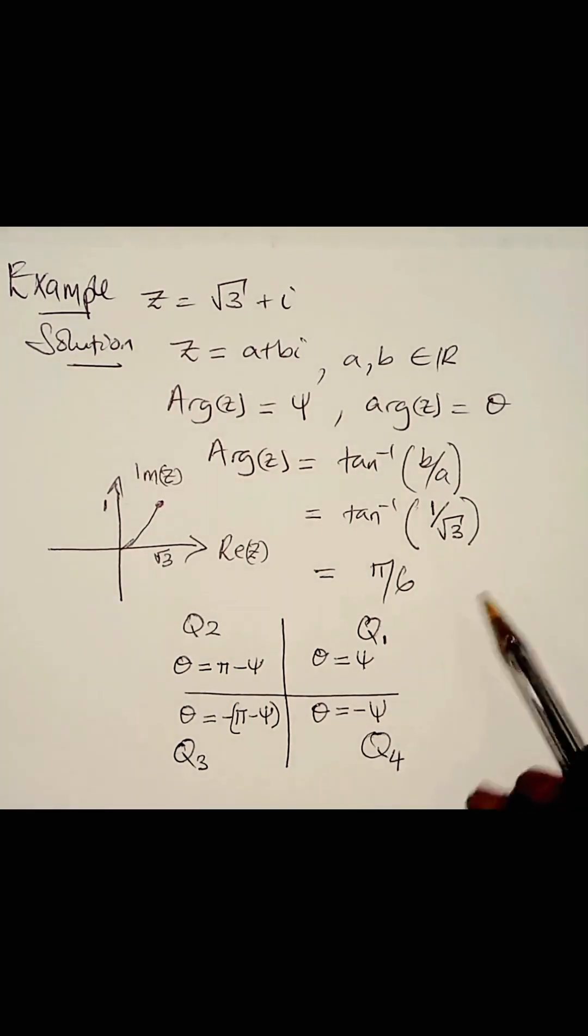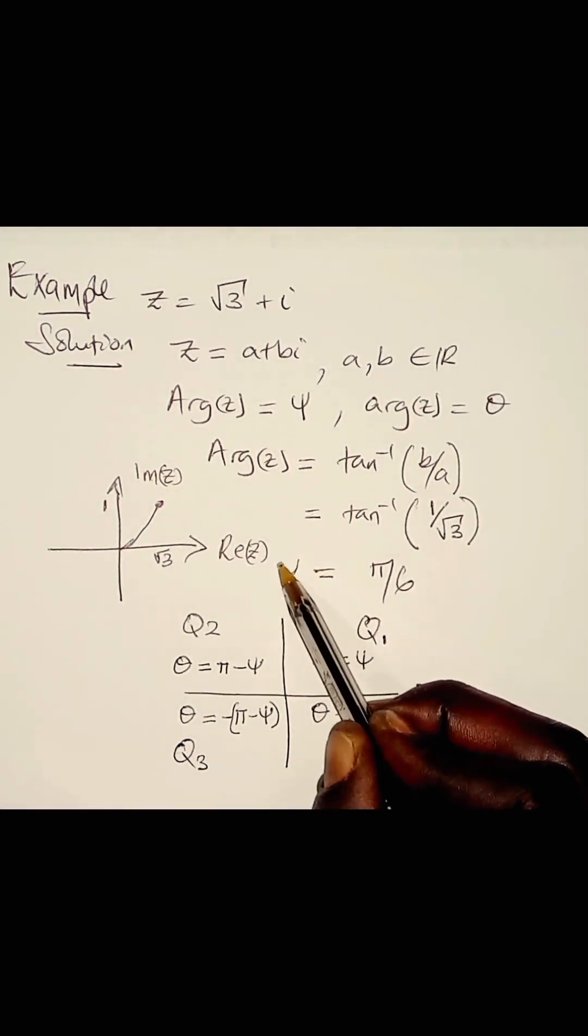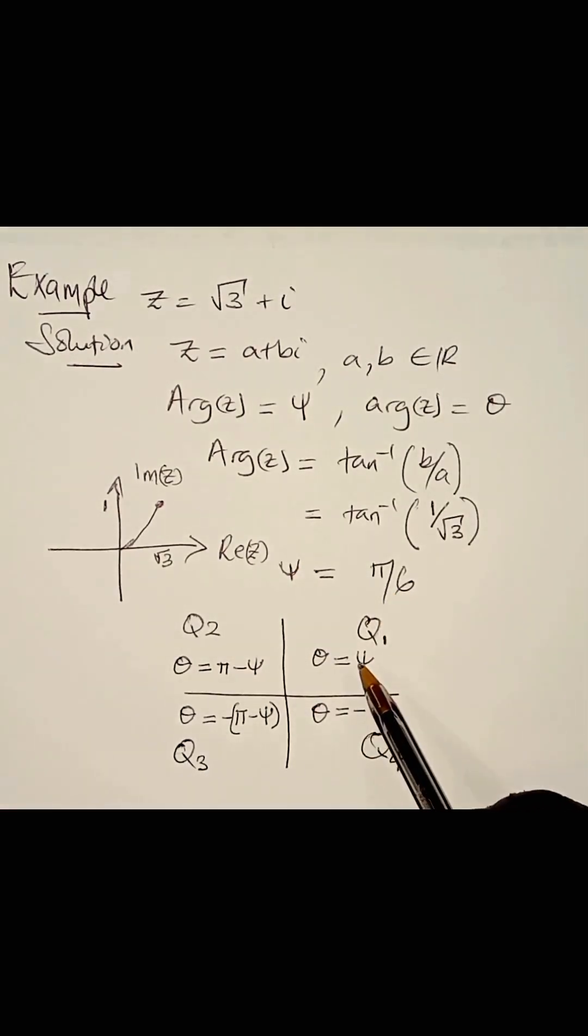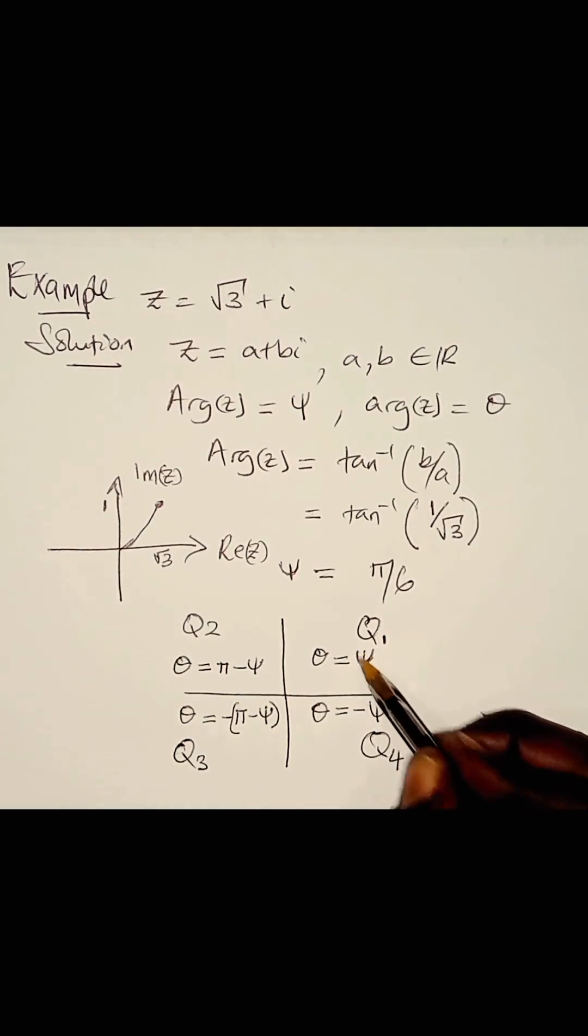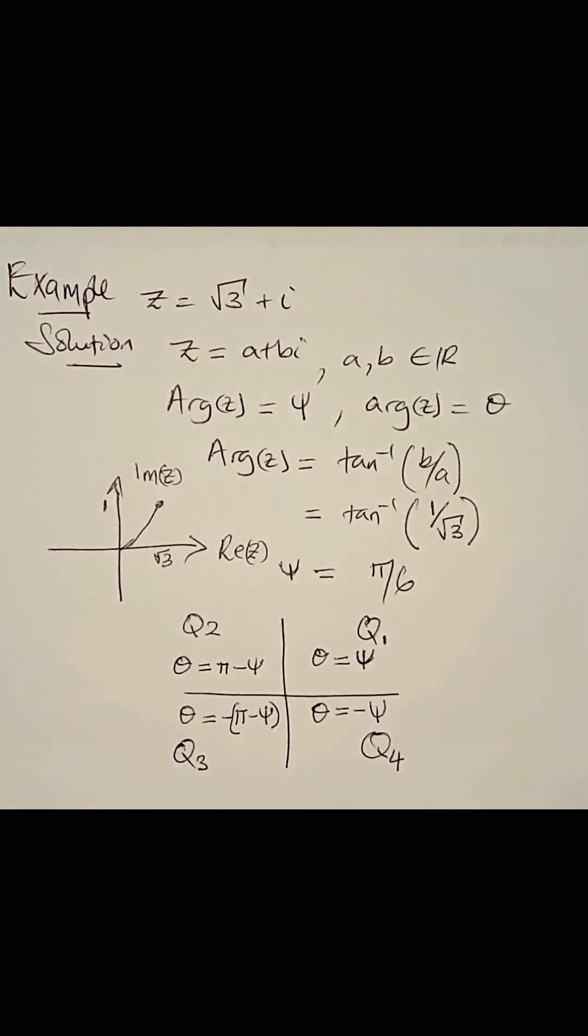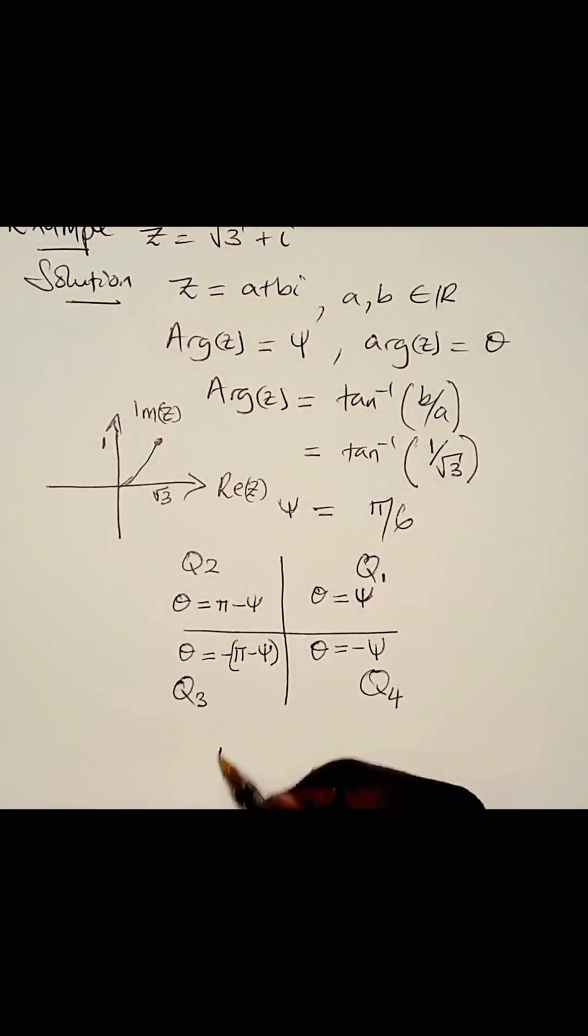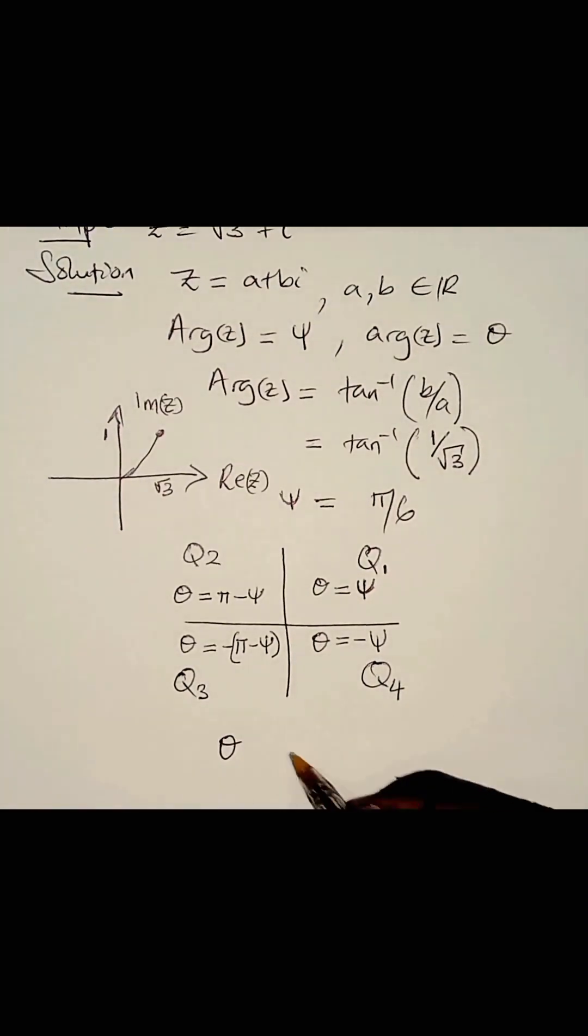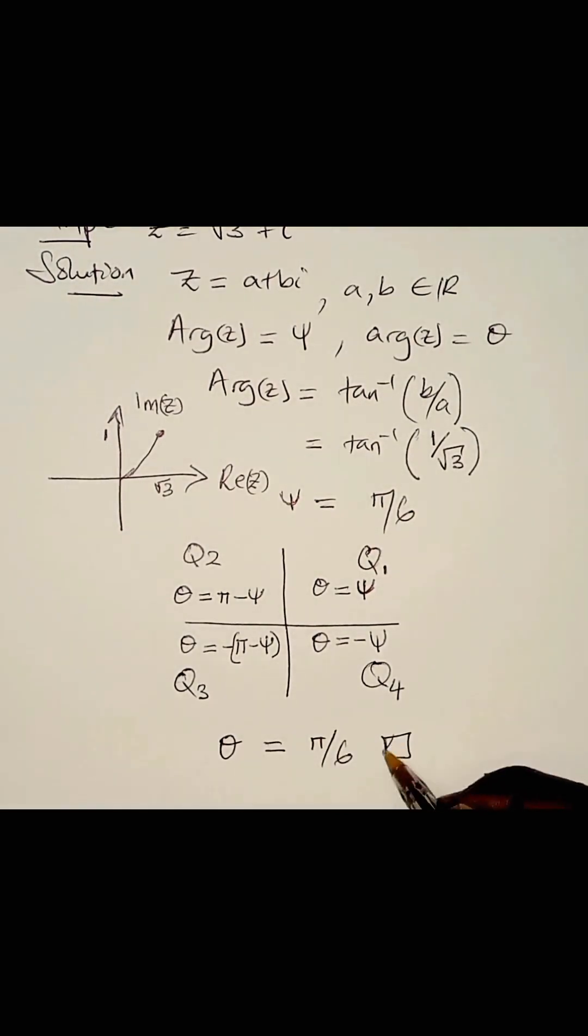And we just found the value of phi. It is pi over 6 from that. And we are in the first quadrant. So, theta is equal to phi. Then we say theta, the principal argument, is equal to pi over 6. We are done with this example.